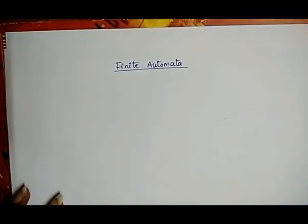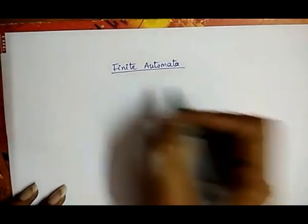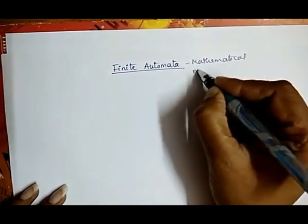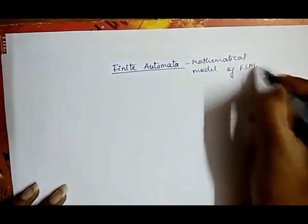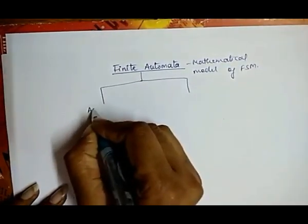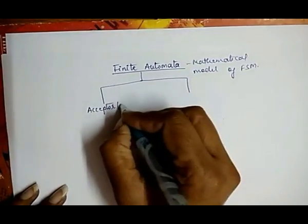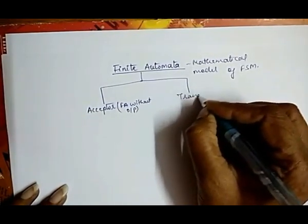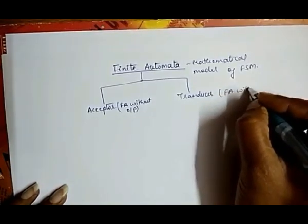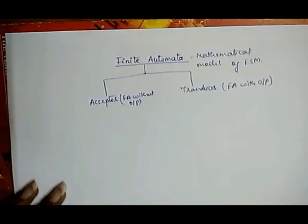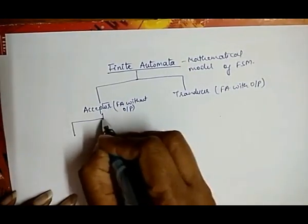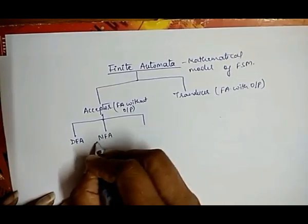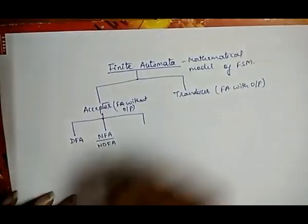Finite automata is a mathematical model of a finite state machine, and it is of two types. The first is known as an acceptor, which means finite automata without output. The second type is a transducer, meaning finite automata with output. The acceptor is further broken down into three parts: DFA (Deterministic Finite Automata), NFA (Non-Deterministic Finite Automata, also written as NDFA), and the third part is epsilon-NFA.